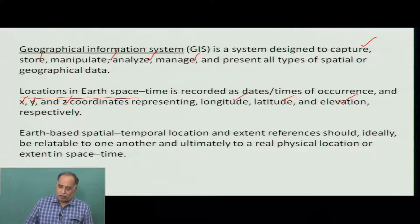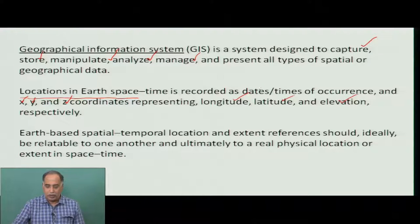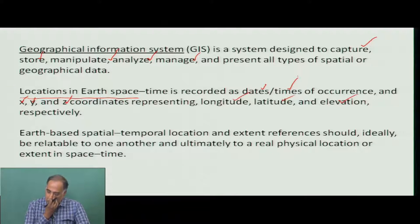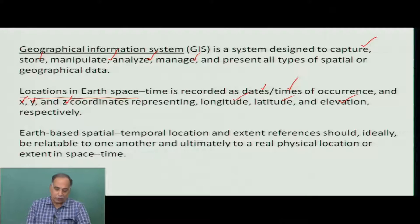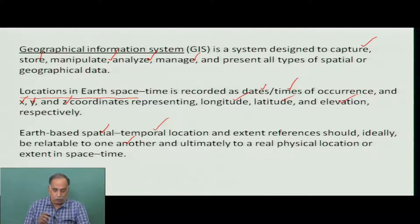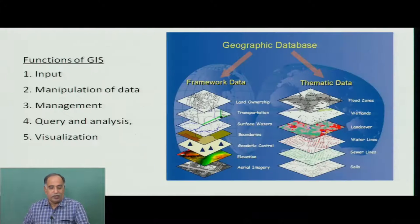GIS can also record dates and time of the occurrence of any event recorded on that surface. So the earth-space data should ideally be spatial, temporal, and location-based, and all of these should be related to each other. That is what the Geographical Information System provides.